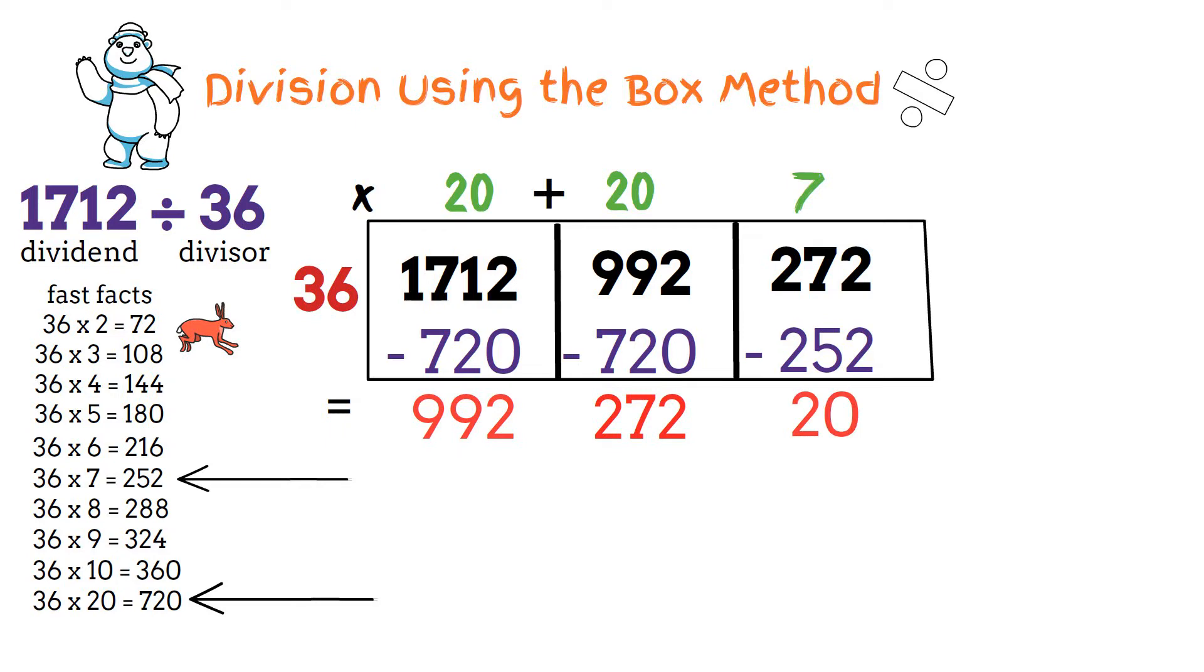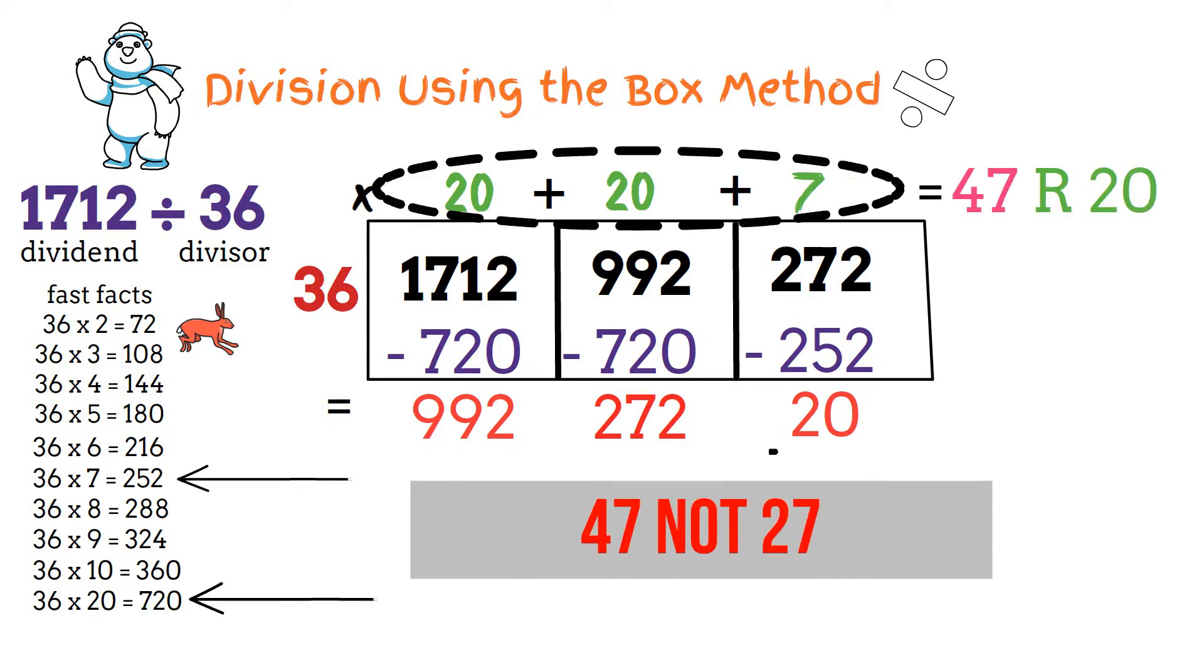Let's add up all the numbers on the top. 20 plus 20 plus 7 equals 27 with a remainder of 20. We get the remainder from subtracting 272 minus 252.